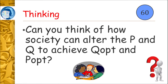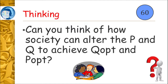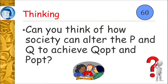So now what we need to think about is how can society alter the price and quantity to move us from the point of PM and QM to the point of P-opt and Q-opt. Pause the video now, have a think about it, and see if there are any ideas you can think of that the government or society could do to fix this. When you're ready, press play to continue.